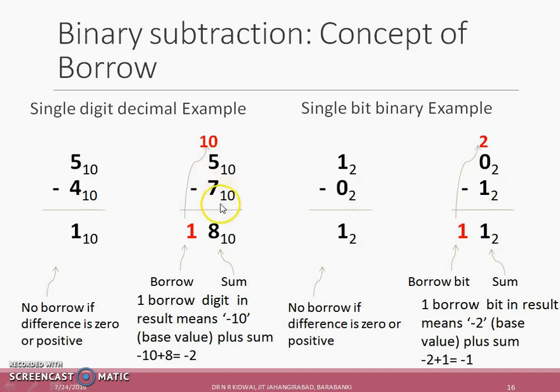While if the first number is less than the second number, then a borrow from higher position is required that results in addition of base value into the first number. That gives 10 plus 5, 15 minus 7 that is equal to 8. So the result is 8 with borrow 1. 1 at a higher position borrow means it is minus 10, then resultant value magnitude is minus 10 plus 8 that is equal to minus 2.